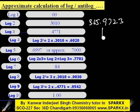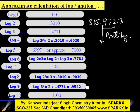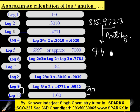Now, if we have to calculate the antilog of 365.9723, the mantissa is 0.97. The antilog of 0.97 will lie between 9 and 10, and it may be 9.4 or 9.5 — approximately 9.4×10^365.